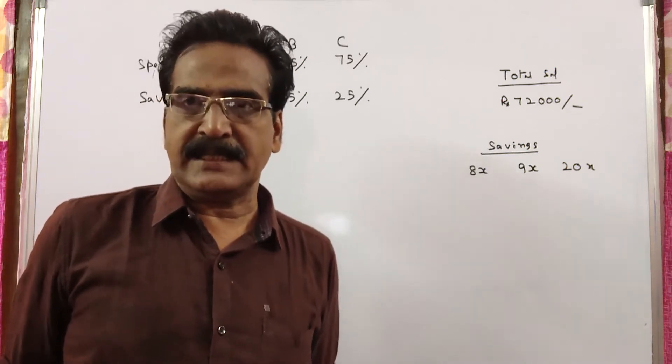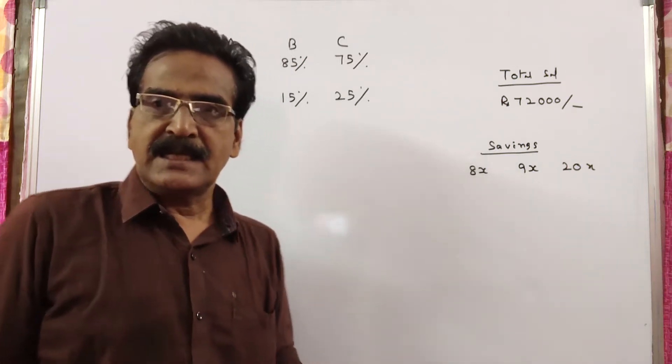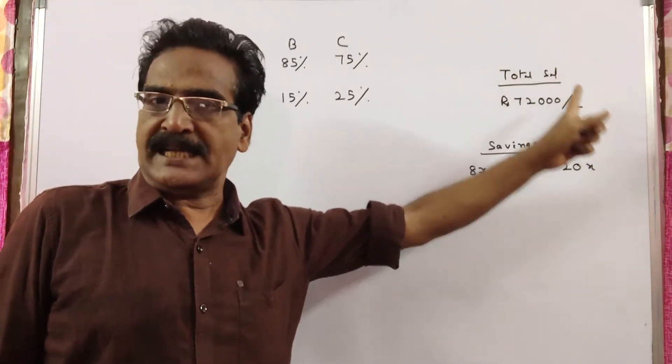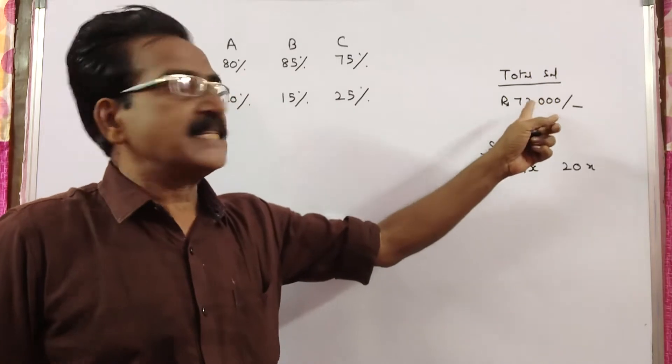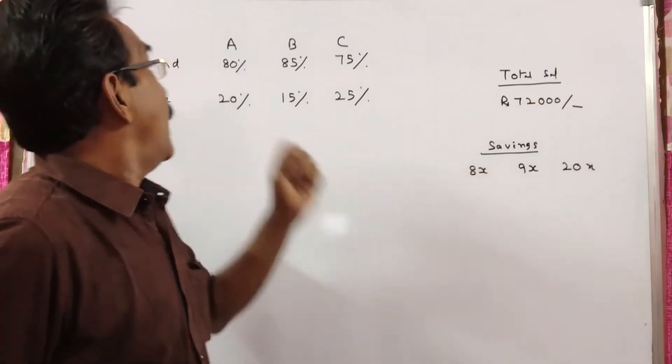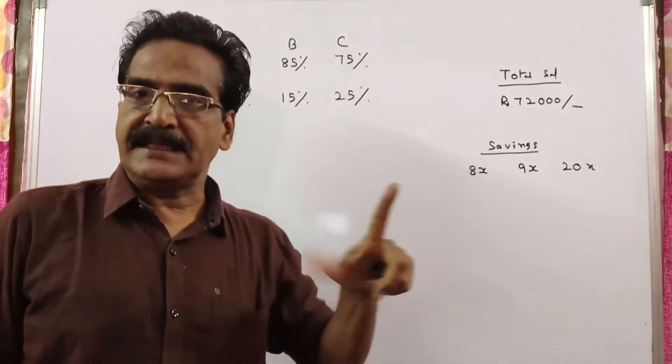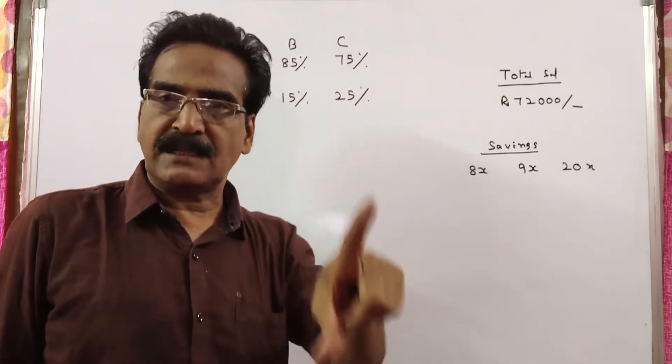Hi friends, good morning. Please look at the next problem in ratio and proportion. The total income or the total salaries of ABC is 72,000 and they spend 80%, 85%, and 75% of their salaries respectively.